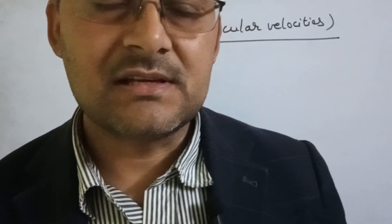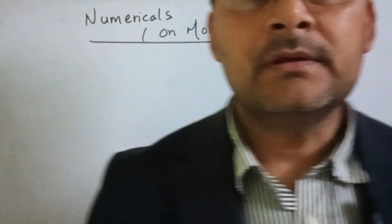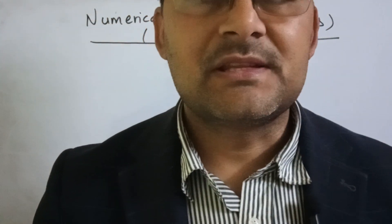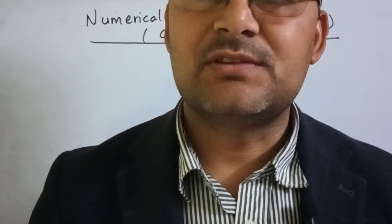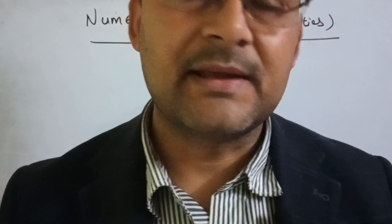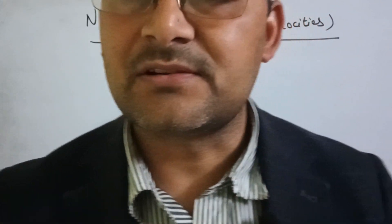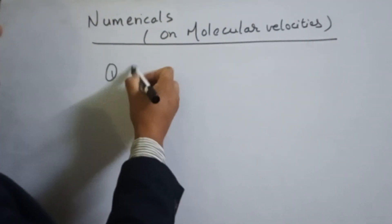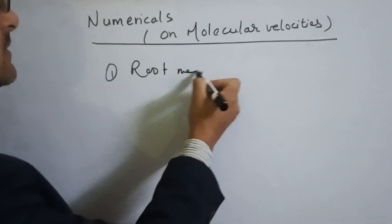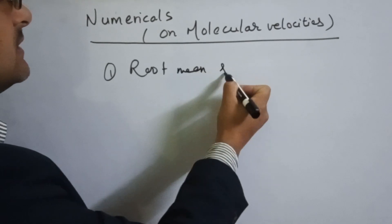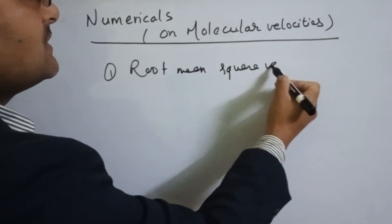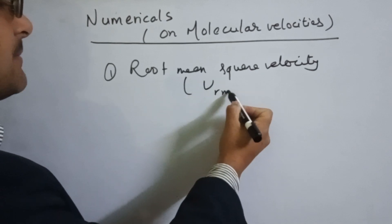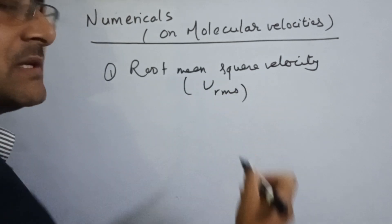We are going to measure three types of velocities. We are going to use root mean square velocity, also written as V-rms.